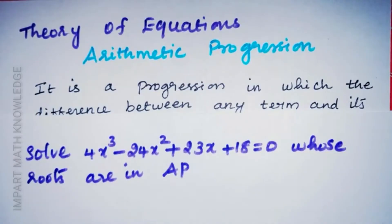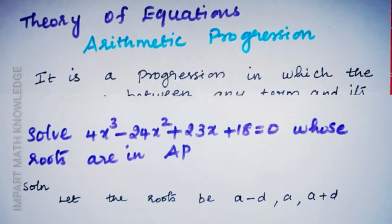The problem is: solve 4x³ - 24x² + 23x + 18 = 0, whose roots are in arithmetic progression. Since this is a cubic equation, it has three roots. Given that the roots are in AP form, we assume the roots are a-d, a, and a+d.